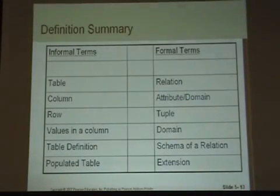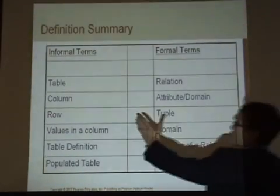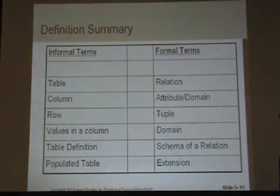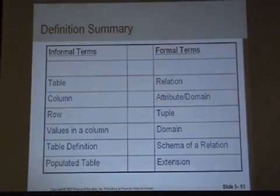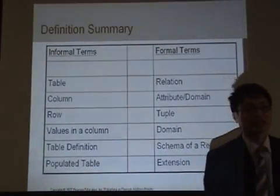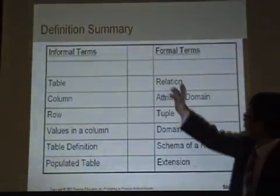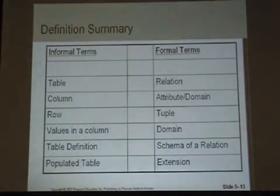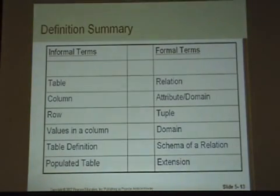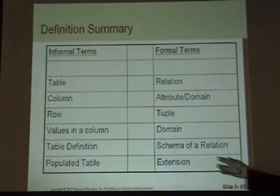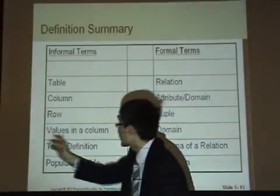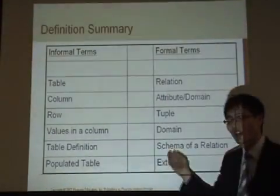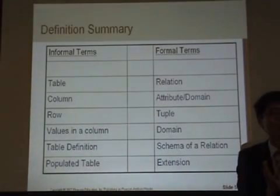This is the comparison table between informal terms and formal terms. You probably know the informal definition: table, column, row, values in column, table definition. Populating a table means inserting or deleting data. So, relation is the same concept as table in informal terms. Attribute is the same as column, tuple is the same as row, and domain is the possible values in a column. But domain is not implemented in any commercial DBMS.